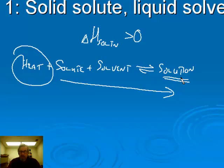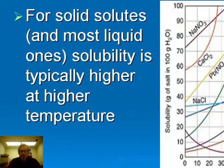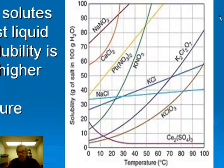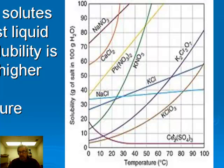For an endothermic process, increasing the temperature will shift the equilibrium to the right. So for solid solutes, and for most liquid ones, the solubility is typically higher at higher temperatures. Looking at the graph, there's sometimes a linear relationship, but often it's nonlinear. For most of these solid solutes there's an increase in solubility as temperature goes up — just like the rule predicts. There is an exception: cesium sulfate actually gets lower in solubility as temperature goes up, but that's an exception.